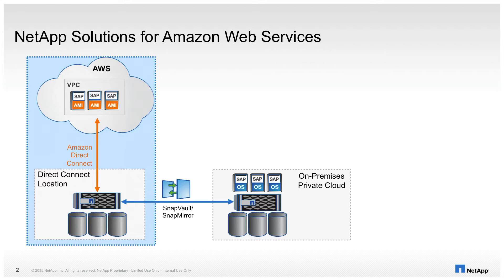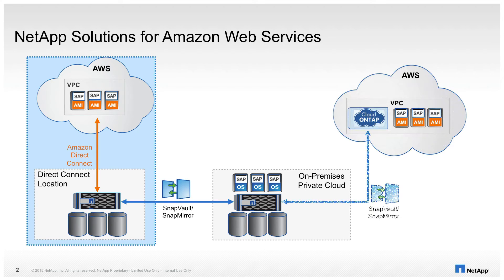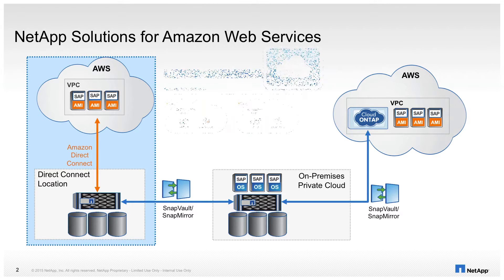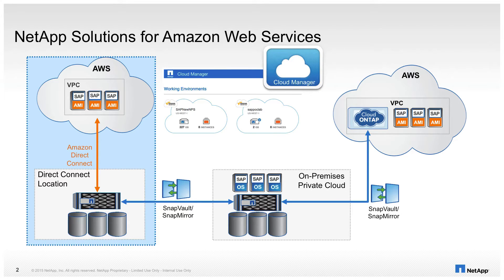Using NetApp's SnapVault and SnapMirror technologies, the data can be synchronized very efficiently to the Direct Connect location. A very similar solution is without physical storage but instead with Cloud ONTAP running inside the customer's VPC. Cloud ONTAP is a virtual clustered Data ONTAP version 8.3 single-node cluster running on an Amazon instance and using Elastic Block Storage. Cloud Manager is a small appliance capable of managing NPS and Cloud ONTAP.